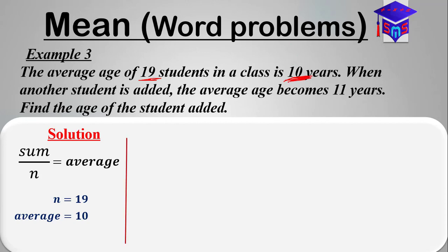So you'll be having the sum over 19 is equal to 10. All right, so you solve for this and you'll be getting the sum to be equal to 10 times 19, and that will be giving us 190.